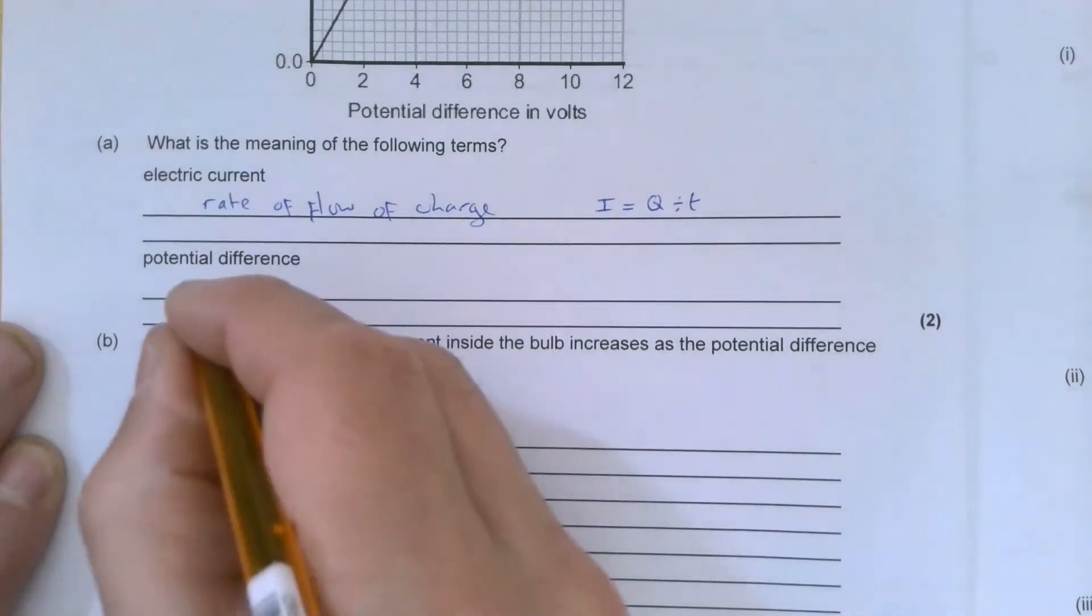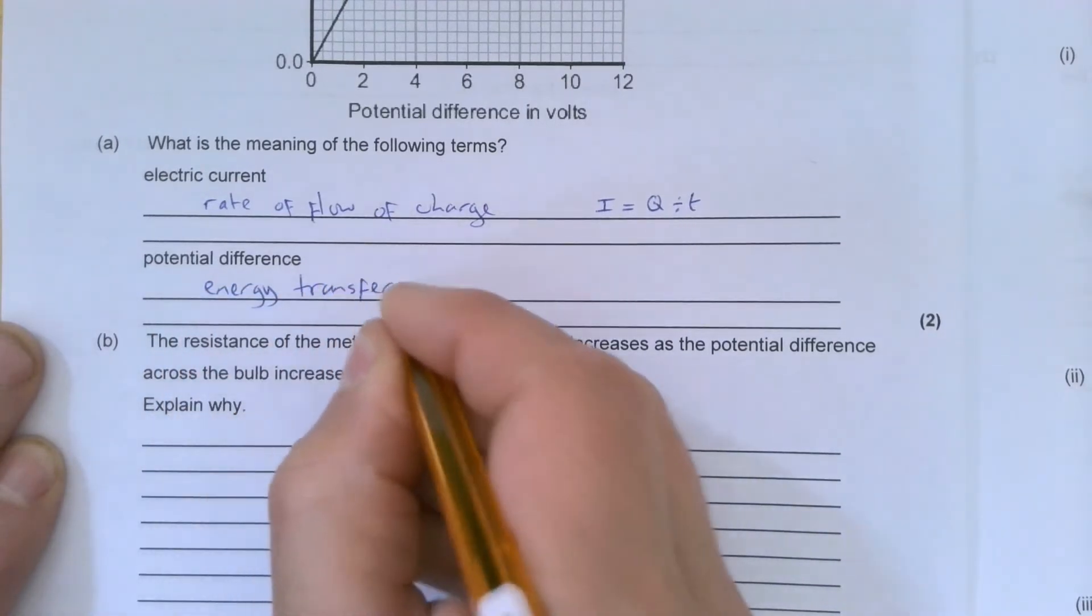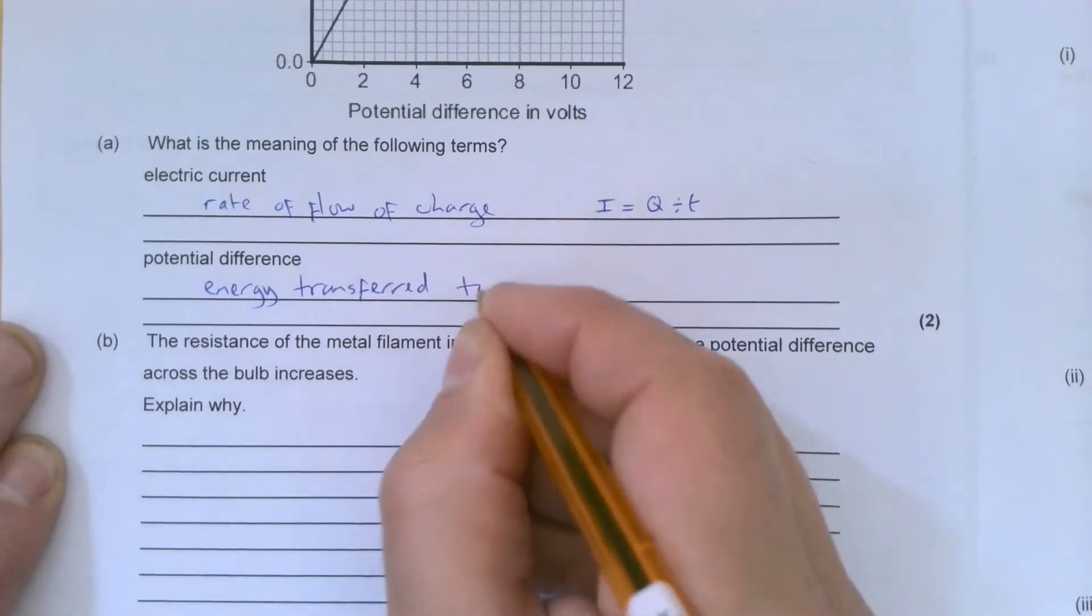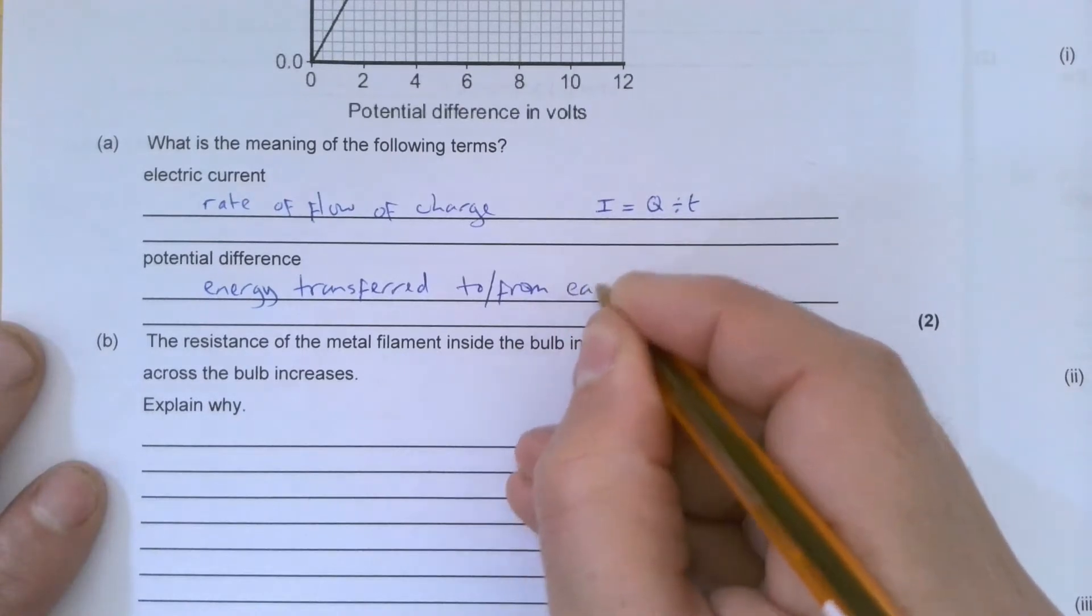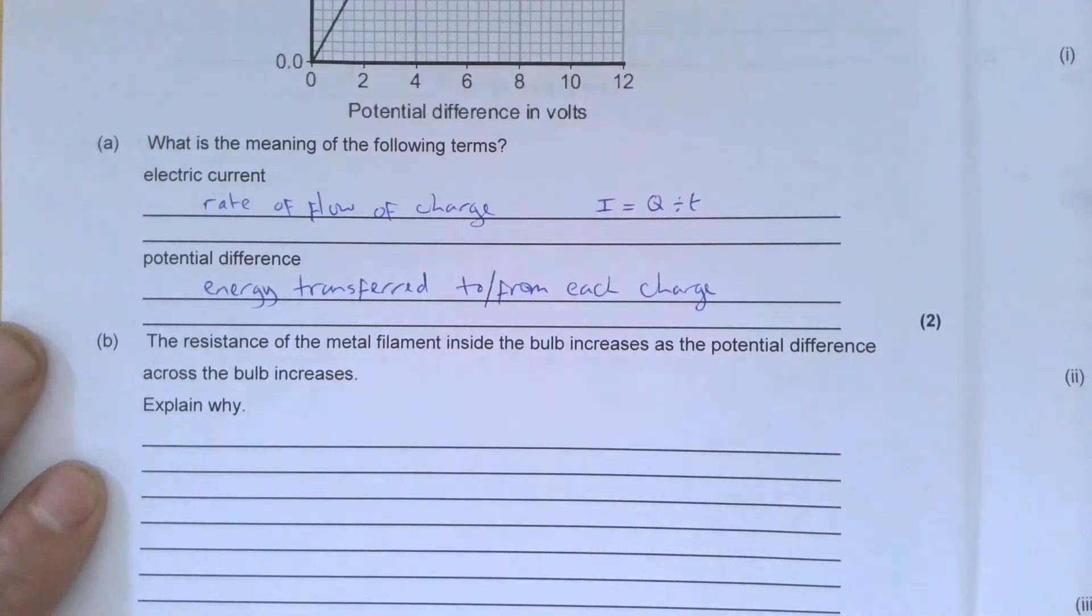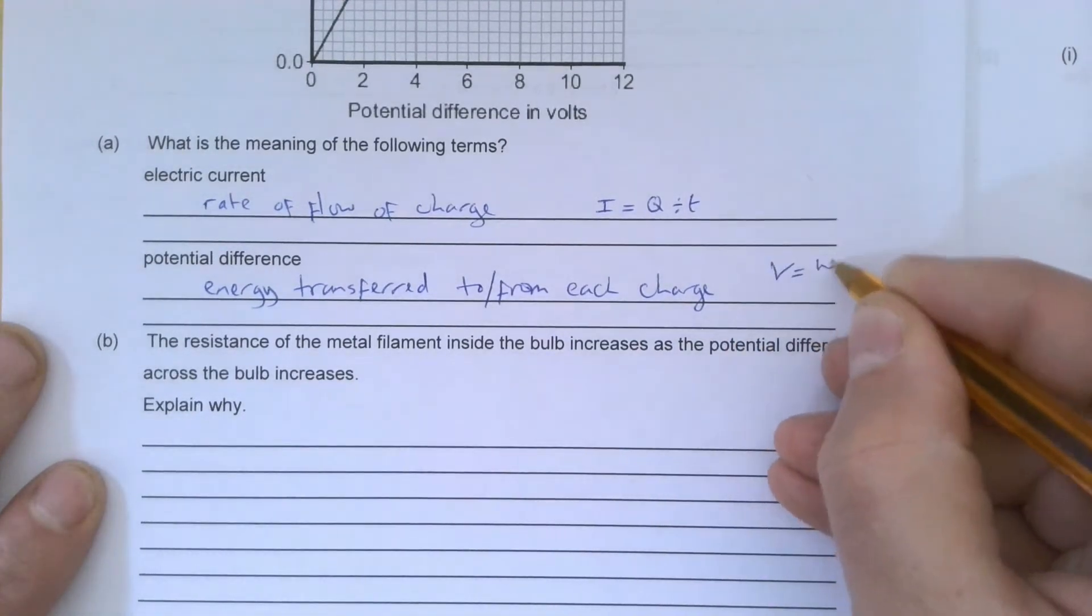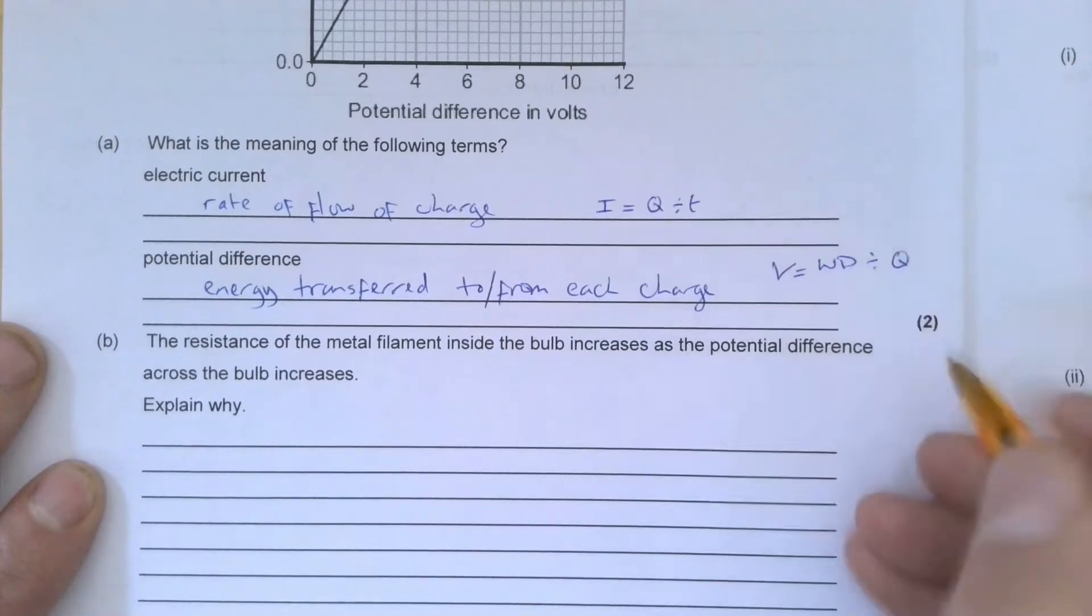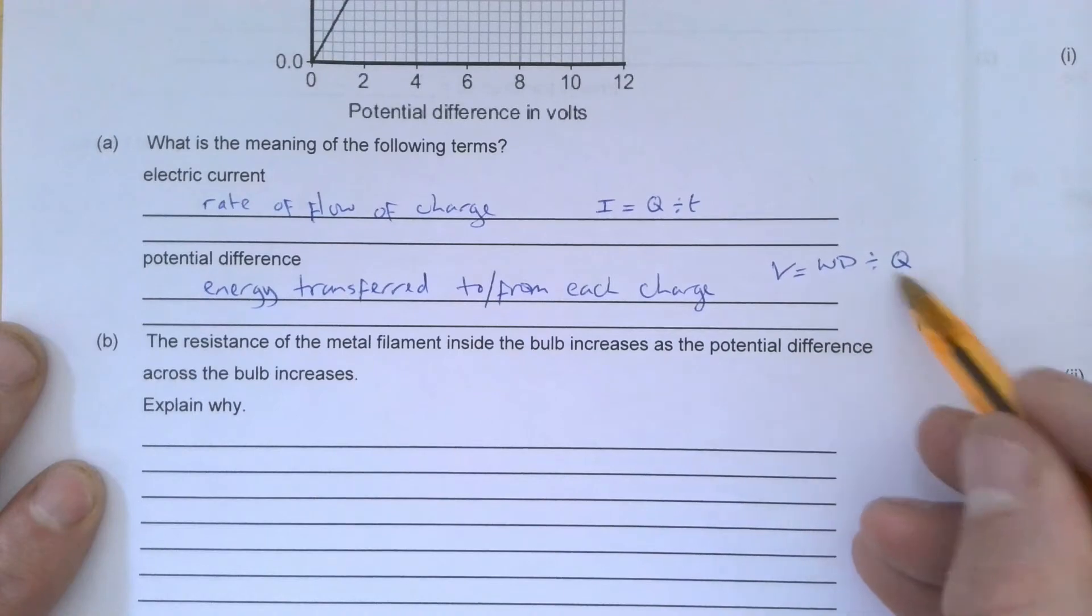The potential difference is the energy transferred to or from each charge. There's a nice straightforward one there. You may have come across that equation: work done divided by Q. So potential difference is work done, which is energy, divided by Q, which is charge.